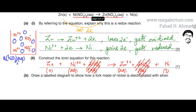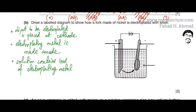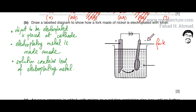The next part asks us to draw a labelled diagram showing how a fork made of nickel is electroplated with silver. To electroplate an object, three things must be followed. First, the object to be electroplated is always placed at the cathode — the fork is connected to the negative terminal of the battery.